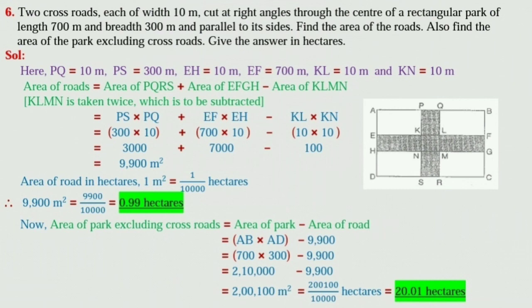Now, area of road in hectares. 1 meter square is equal to 1 upon 10,000 hectares. Therefore, 9900 meter square is equal to 9900 upon 10,000 is equal to 0.99 hectares.